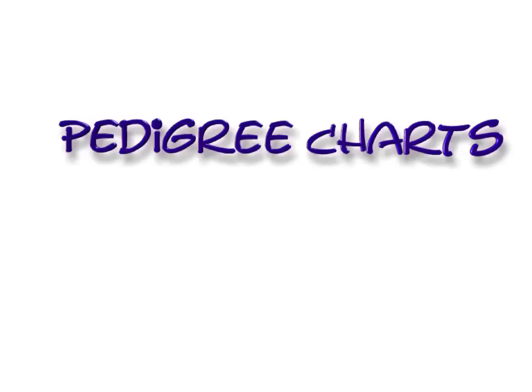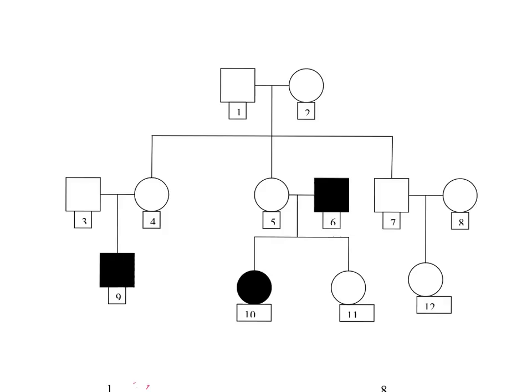This is a lesson on pedigree charts. Okay, this is a pedigree chart and let me explain to you how it works. You can see that we have circles and we have squares.